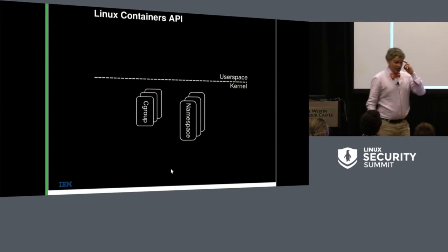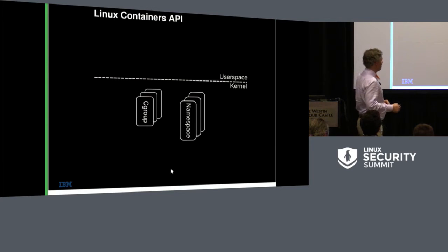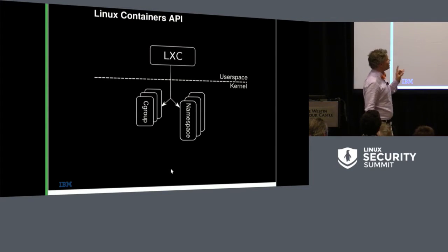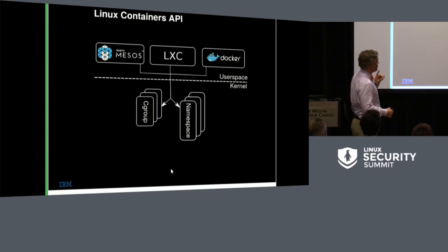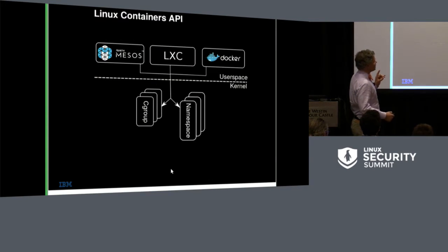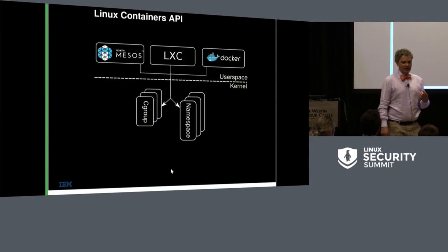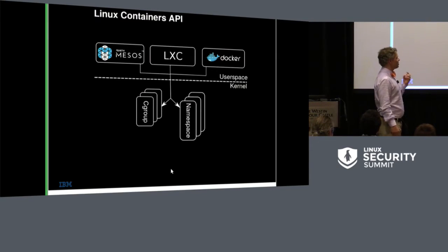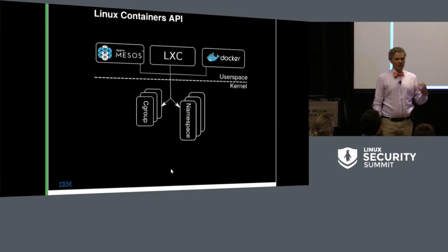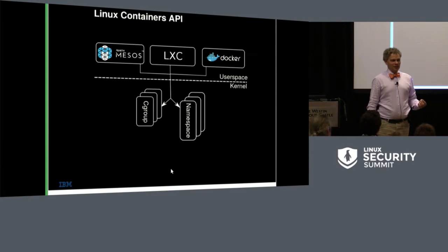We can get straight into the kernel API for containers — the cgroup and namespace API — which Richard Briggs went over. Every orchestration system for containers uses this same API, so whatever you do on any feature or security thing is automatically inherited by any of the orchestration systems, provided they turn it on. The virtualizations are completely granular, meaning you can choose not to have them, which creates an infinite configuration space.